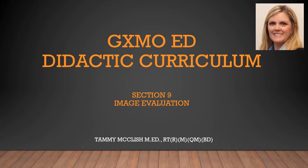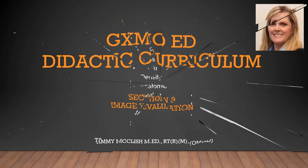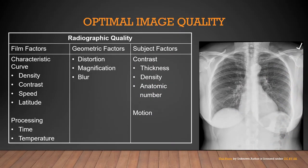Hi, this is Tammy McClish. Let's take a look at Section 9 Image Evaluation. There's a term called radiographic image quality, which refers to the fidelity with which the anatomical structure being imaged is rendered on the radiograph. A radiograph that faithfully reproduces structure and tissues is identified as a high quality radiograph. When working in an x-ray department, I have to determine if a problem with my image is due to the film, geometric factors, or something that happened with the subject I was x-raying.